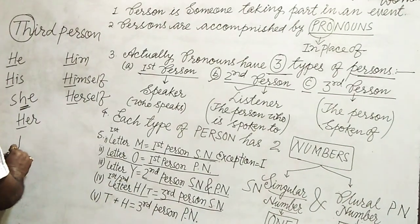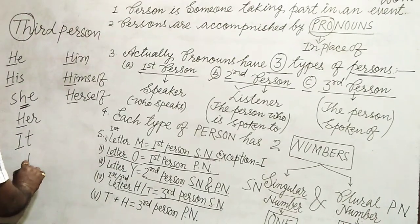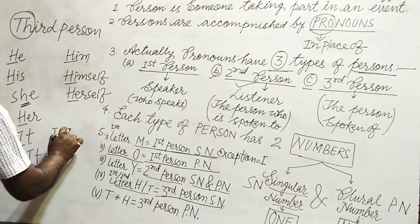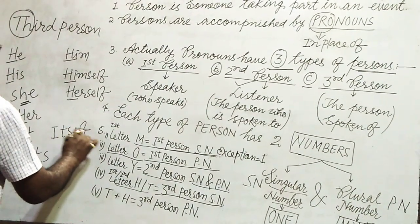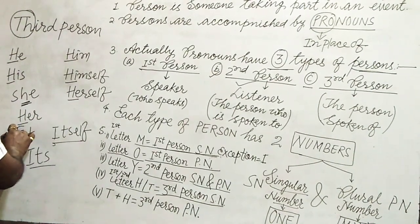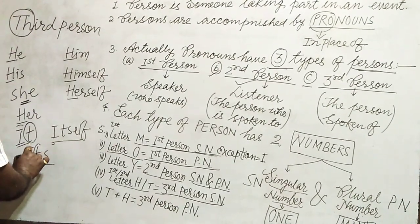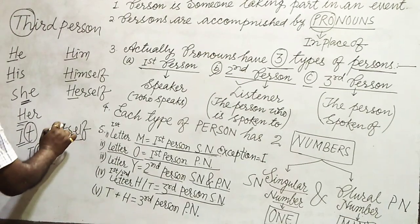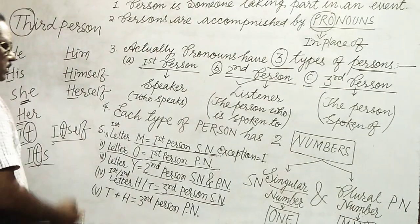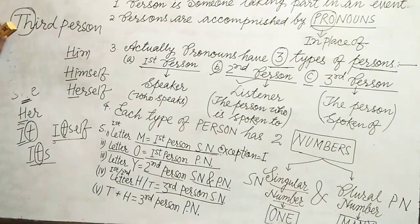Similarly, it, its, itself — here T comes as the first or second letter in these pronouns, and T denotes third person singular number.